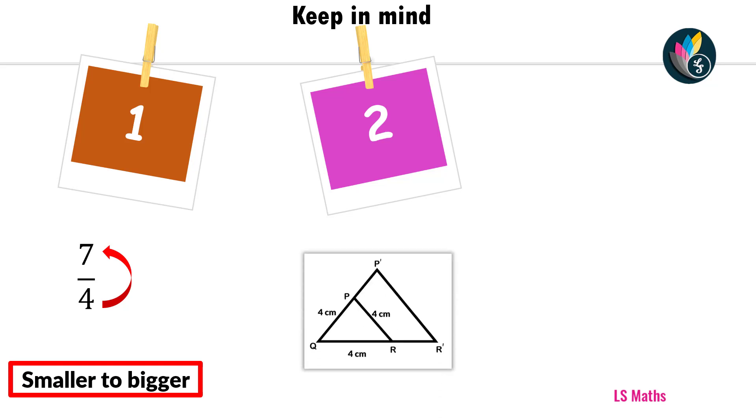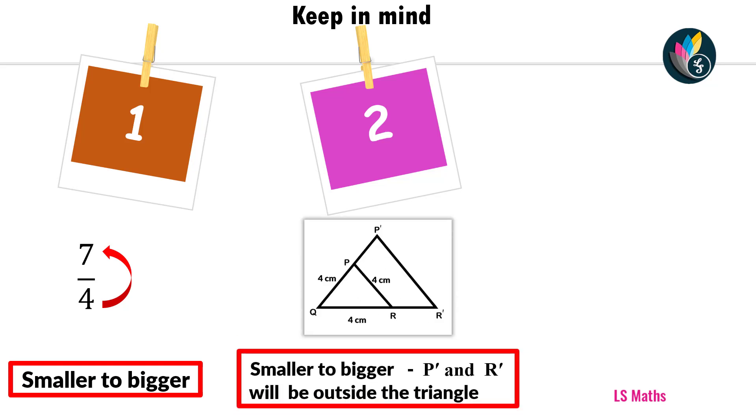Point 2. Look at this picture. Whenever we draw a bigger triangle from a smaller one, P prime and R prime will be outside the triangle.